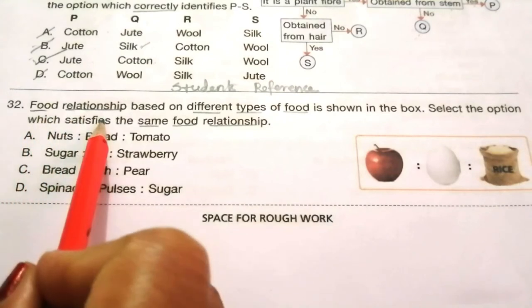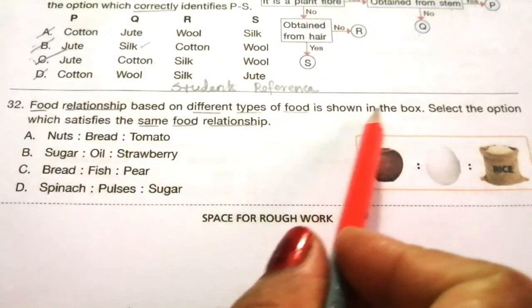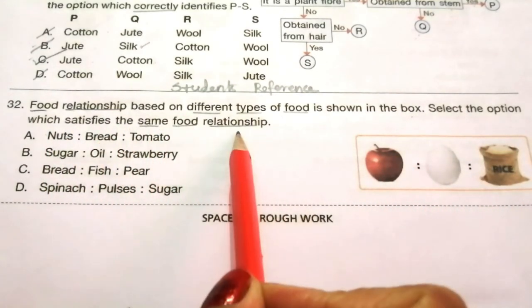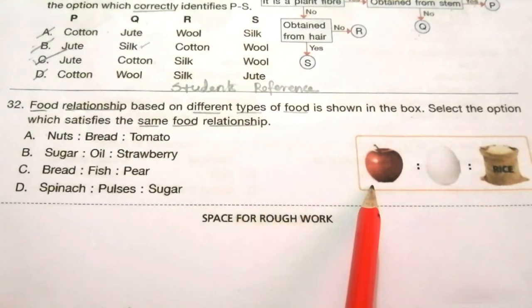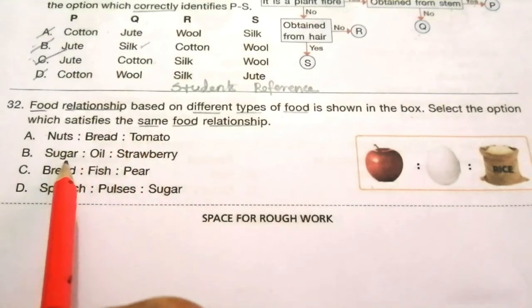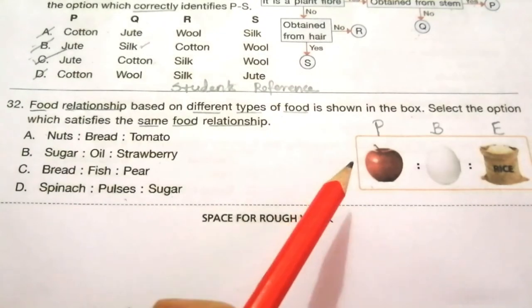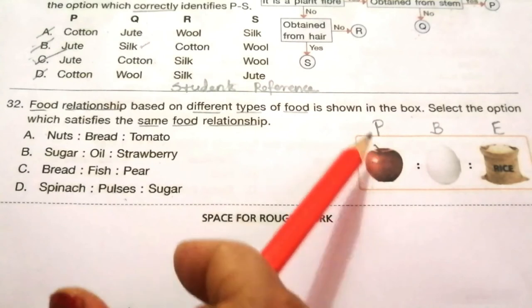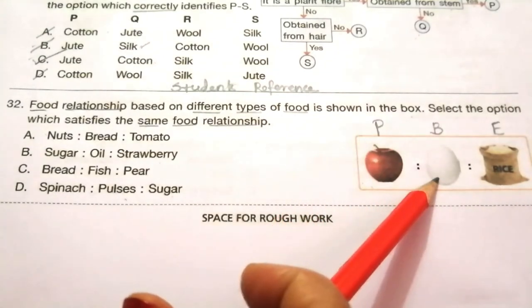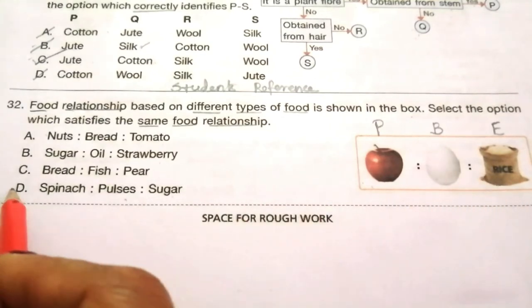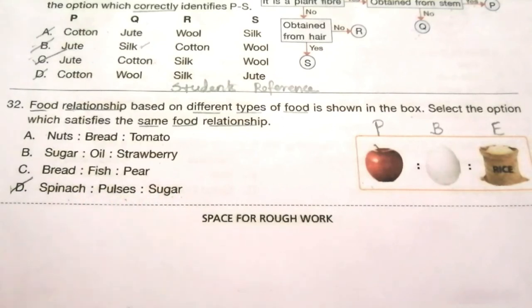Question 32: Food relationship based on different types of food is shown in the box. Select the option which satisfies the same food relationship. Read the options carefully: bread and tomato, sugar and oil, strawberry and bread, fish and pear, spinach pulses sugar. Apple is protective food, egg is bodybuilding food, and rice is energy giving food. So the correct answer is D, spinach pulses sugar.